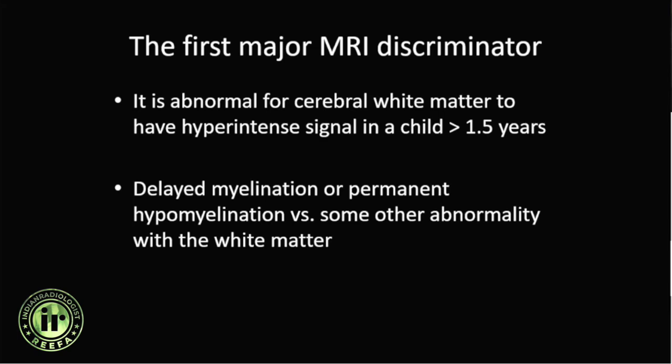The first major MRI discriminator is whether the white matter is normally myelinated for the child's age. For this we need to know the exact age of the patient, including whether the patient is term or preterm, so we can correct the age accordingly. Delayed myelination has to be distinguished from permanent hypomyelination versus some other abnormality within the white matter.